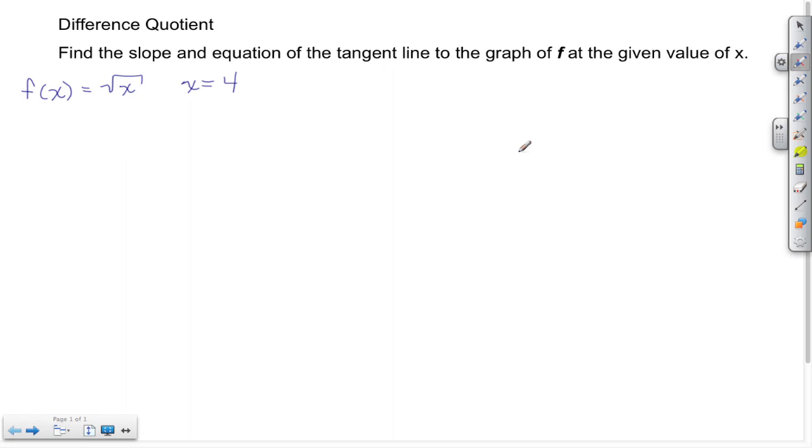Welcome back to STS. In today's video we're going to continue with the difference quotient. This time we're going to find the slope and the equation of the tangent line of a square root function. We begin by taking the value of x that's given and putting that into our function.